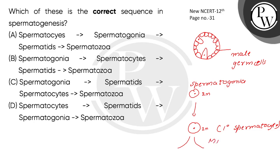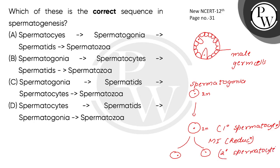The primary spermatocyte then undergoes Meiosis 1, which is a reductional division. After this reduction division, the resulting cells are called secondary spermatocytes.